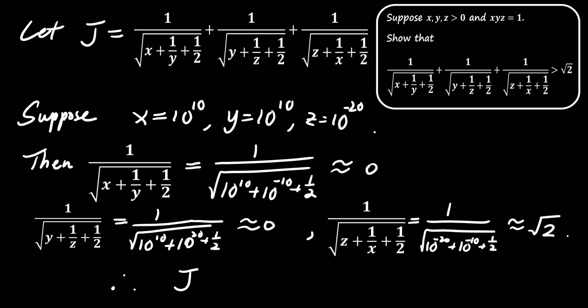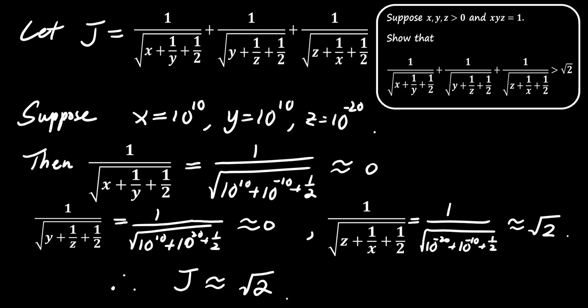Therefore, j is approximately equal to the square root of 2 in this special case, but we need to prove that j is greater than the square root of 2 for all positive values of x, y, and z, given that their product is equal to 1.